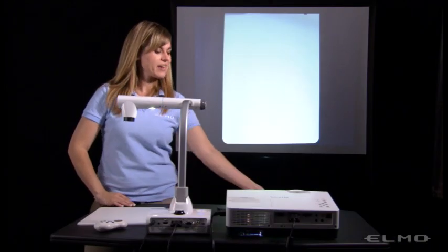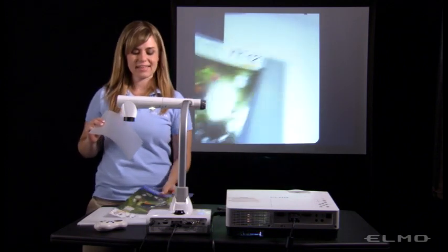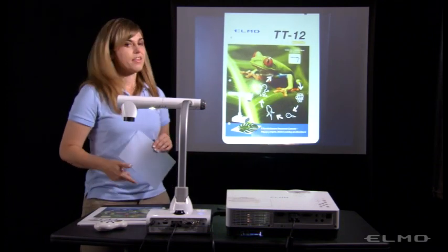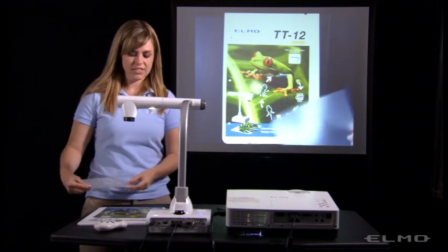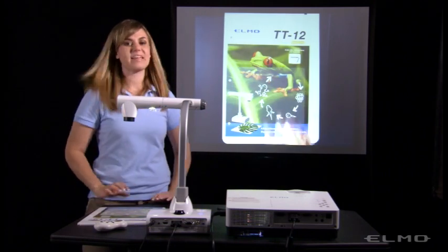The document camera comes with an anti-glare sheet, so if you're going to be looking at something that's a little bit glossy and you have a glare, then you can use your anti-glare sheet, place that over the glare, and it will eliminate that hot spot.